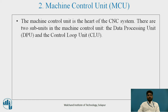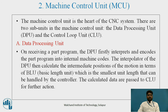The Machine Control Unit, also called MCU, is the heart of the CNC system. There are two subunits: the Data Processing Unit (DPU) and the Control Loop Unit (CLU). On receiving a part program, the DPU firstly interprets and encodes it into internal machine codes. The interpolator of the DPU then calculates the intermediate positions of the motion in terms of Basic Length Unit (BLU), which is the smallest unit length that can be handled by the controller. The calculated data are passed to CLU for further action.